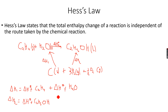We know what delta H1 and delta H2 are, and we can find these values in tables because the standard enthalpy changes of formation are constant for all elements. These values will be given to us because they are known values.